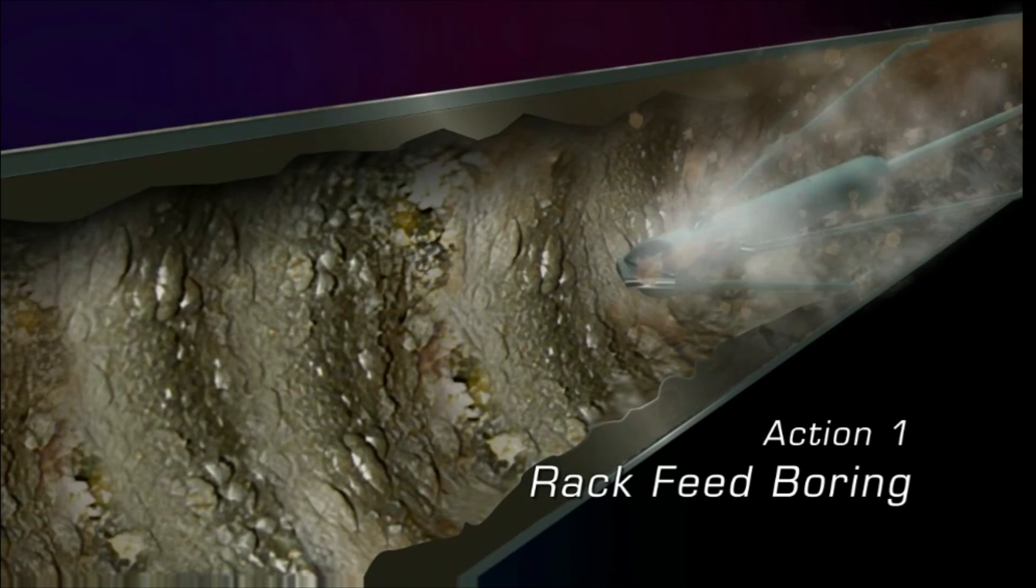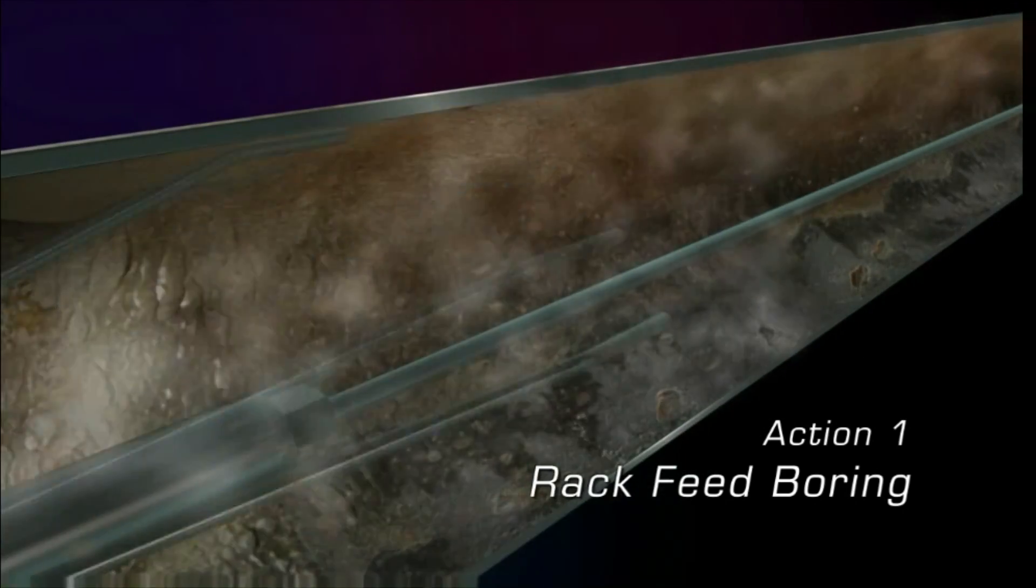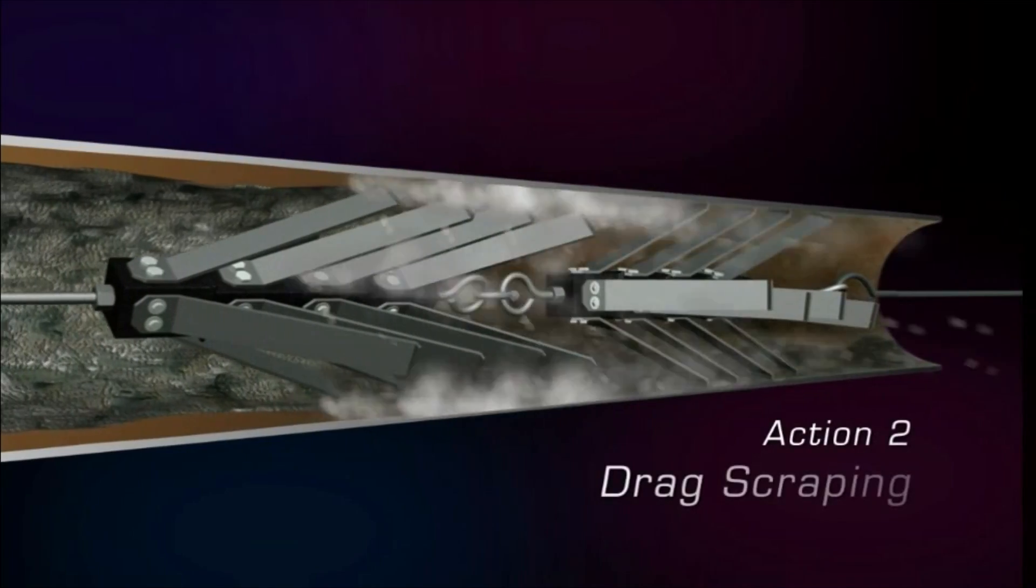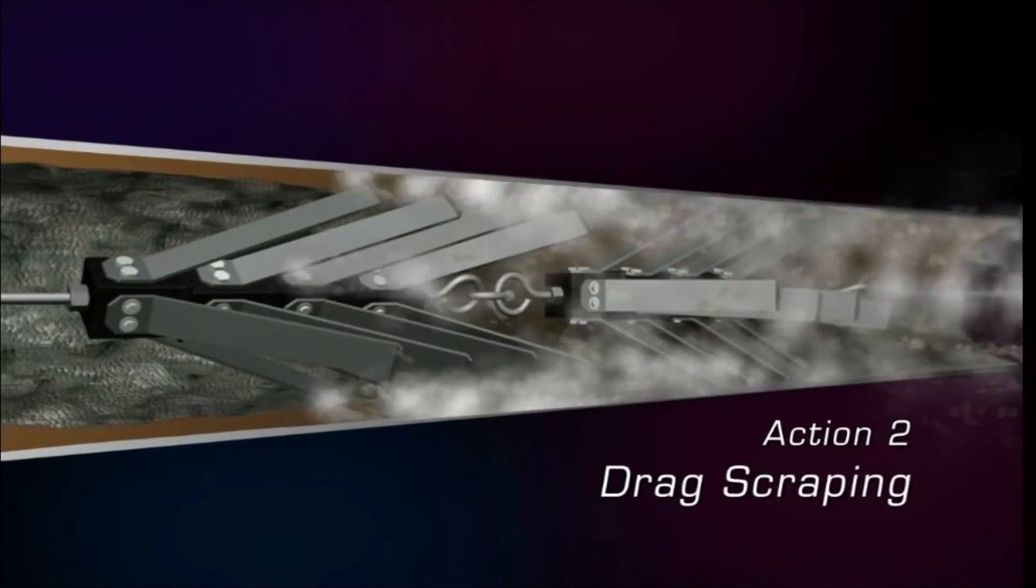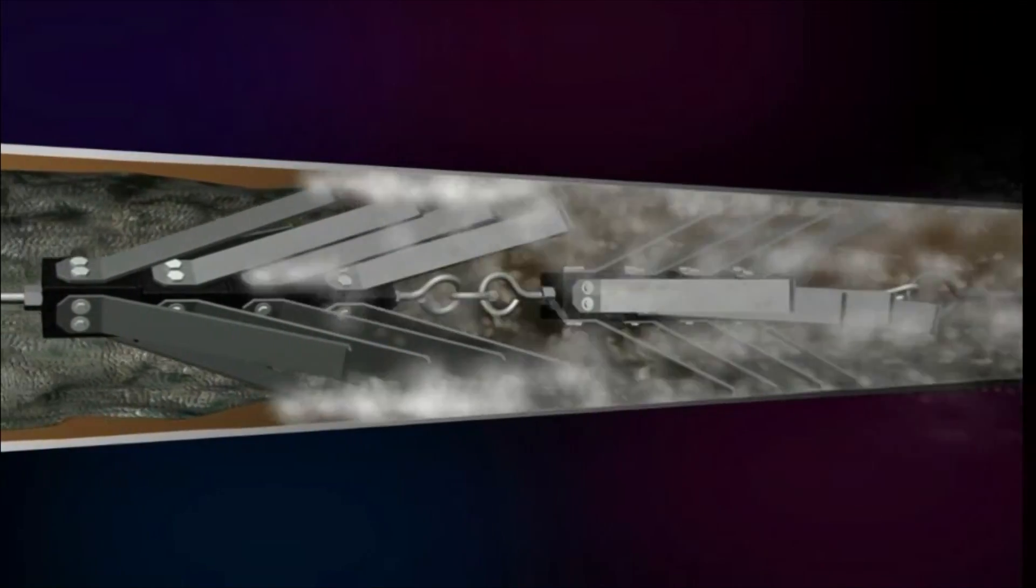The process is simple. Pipelines to be rehabilitated are thoroughly cleaned and prepared for the lining application using a variety of cleaning methods until the interior surface of the pipe is clean, dry and free of excess moisture, debris and contaminants. The clean pipe is CCTV inspected to ensure the surface is ready for the lining application.